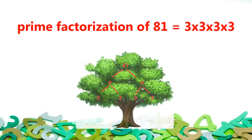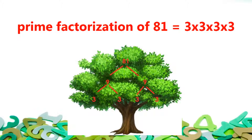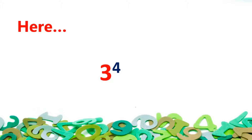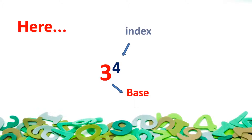But it is not easy to write it as 3 into 3 into 3 into 3. Hence, another way to write it is 3 raised to power 4. In this representation, 3 is the base and 4 is the index.